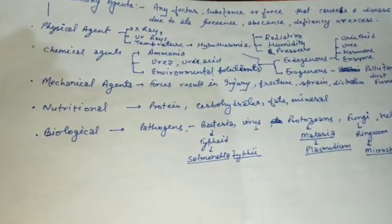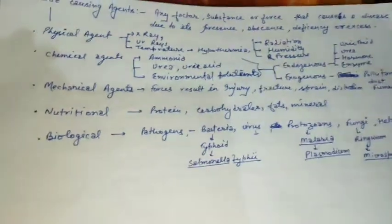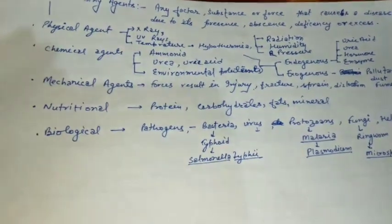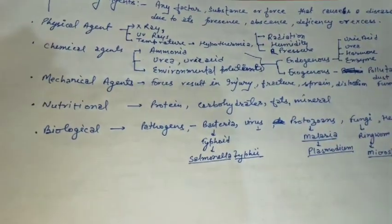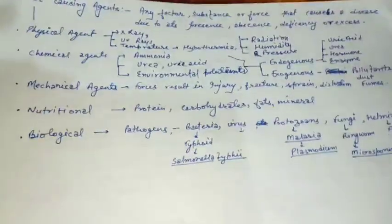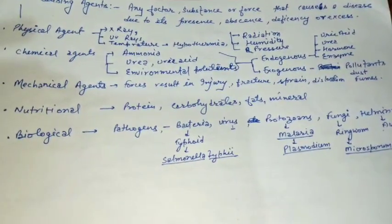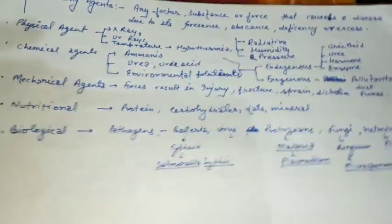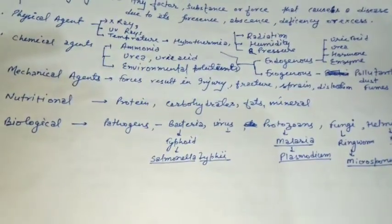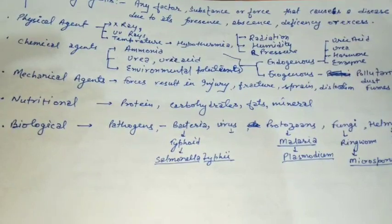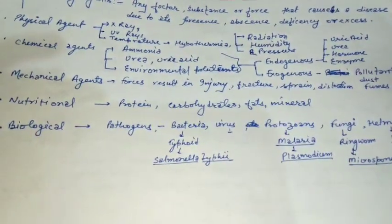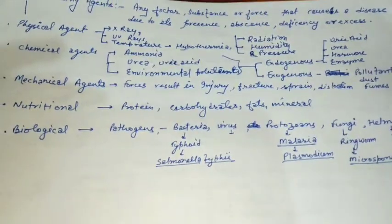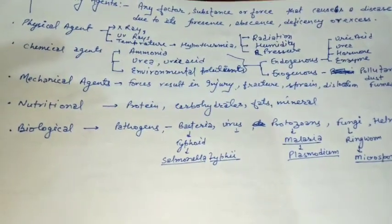So everything that causes a disease is a disease-causing agent. If we talk about the types, disease-causing agents include physical agents, chemical agents, mechanical agents, nutritional agents, and biological agents.